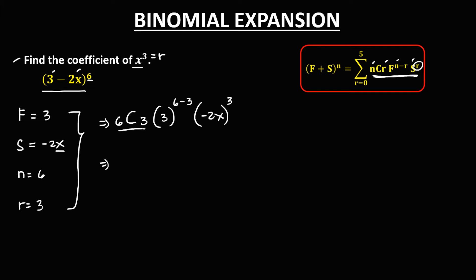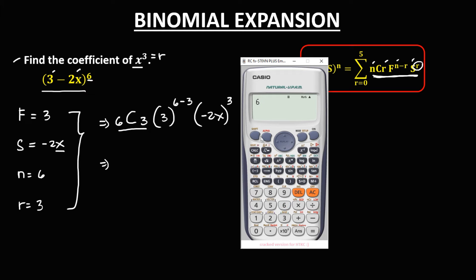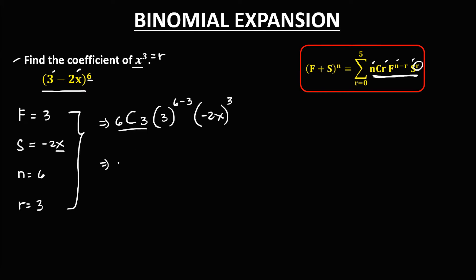To simplify: 6 choose 3 — using the calculator with shift NCR — 6 choose 3 equals 20. Then times 3 to the power 3. Then for the second term, distribute this exponent 3, so this becomes negative 2 to the power 3, times x to the power 3.